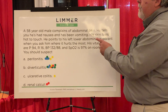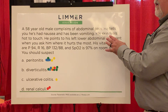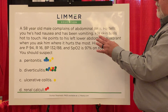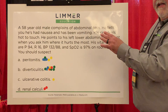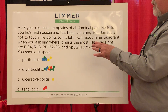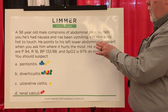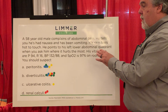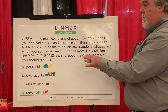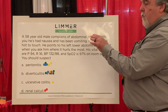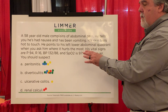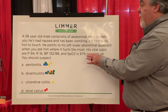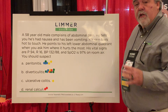I'm Dan Limmer from Limmer Education. Fifty-eight year old male complains of abdominal pain, he's had nausea, he's been vomiting, his skin is hot to the touch, he points to his left lower abdominal quadrant when you ask him where it hurts the most. Vital signs: pulse of 94, respiratory rate of 16, blood pressure 132 over 88, SpO2 at 97% on room air. You should suspect...